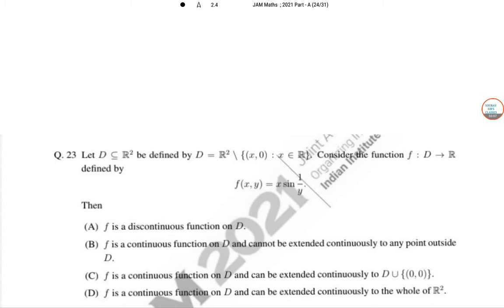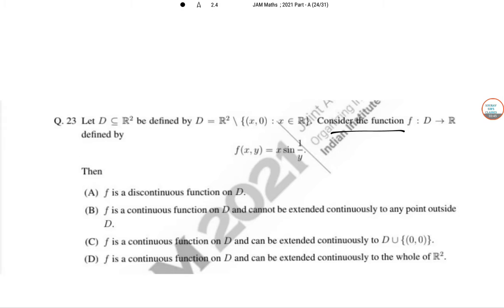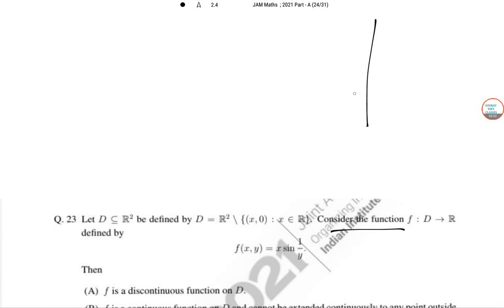Next, question 23. If D belongs to R square, we define by D of R square X of zero. Consider the function F of D belongs to R defined by this. So, if it is continuous or discontinuous, that is the main discussion over here.